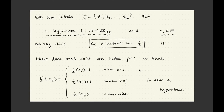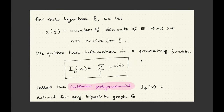I call one of these green vertices active for that hyper tree if it is not possible to reduce the value of the hyper tree at that vertex E_i, and subsequently add one to the value of the hyper tree at a smaller index, so that the result — this modified list of numbers — is also a hyper tree. So if I cannot do that, then I call that green vertex active for that hyper tree. For each hyper tree, you can count how many elements of E have this status. In fact, I will count those elements of E which do not have that status — the complement set, those that are not active.